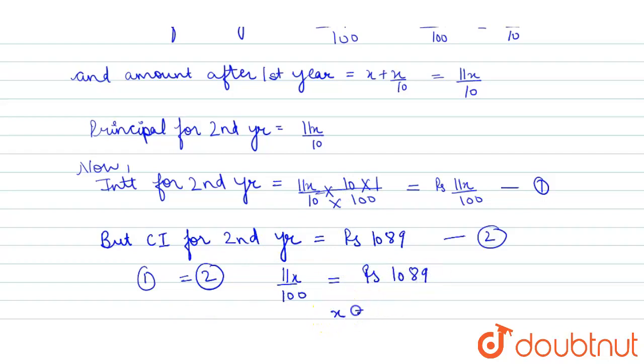After solving this we will get X equals rupees 9900. So this is our sum of money.